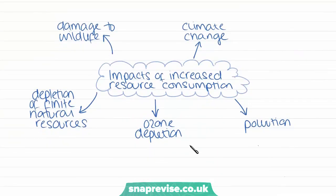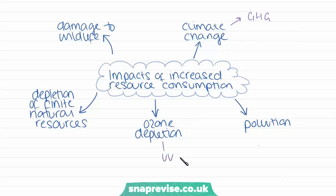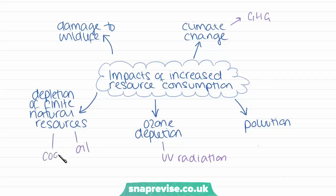The impact of increased resource consumption by humans on the environment leads to things like climate change through the emission of greenhouse gases causing global warming, things like pollution, ozone depletion which allows more UV radiation into our atmosphere and warms the earth, the depletion of finite natural resources like fossil fuels — oil, coal, gas — other minerals and metals, and damage to wildlife through the destruction of habitats.